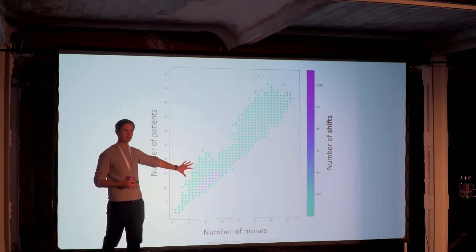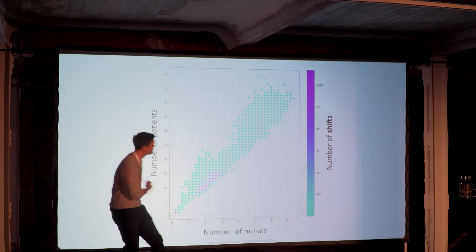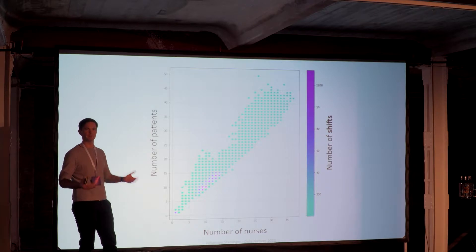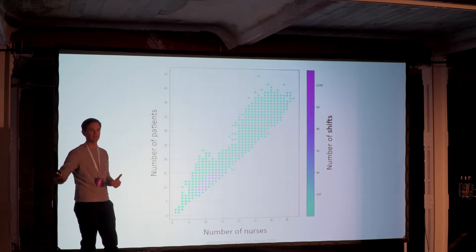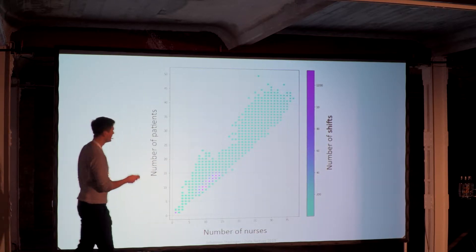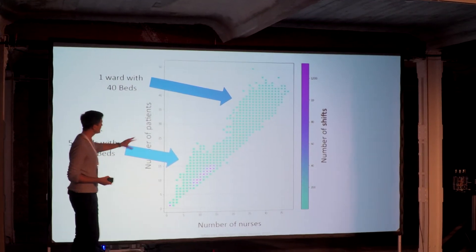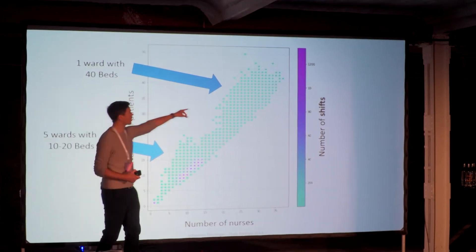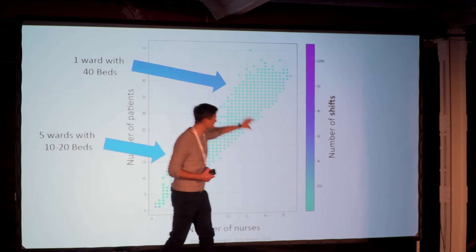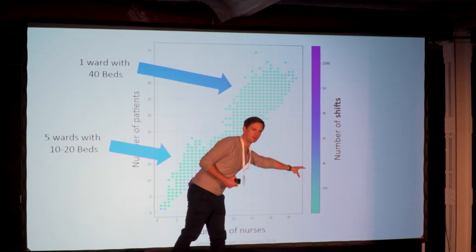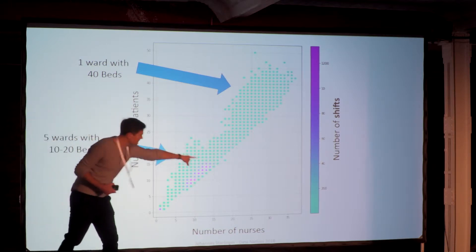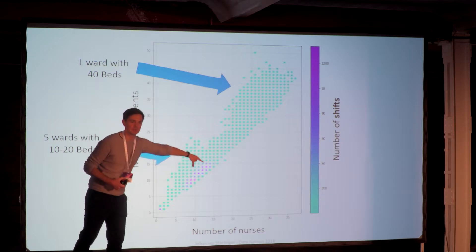What you can see at first sight is that it all goes up diagonally, which is characteristic for intensive care wards because you have a very good patient-nurse ratio — in a regular ward you don't have one nurse for every patient, but in intensive care you usually do. This nicely correlates with the actual ward situation at Charité, where we have one ward with about 40 beds and five wards with 10 to 20 beds.